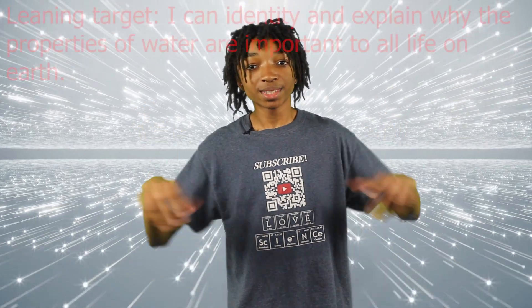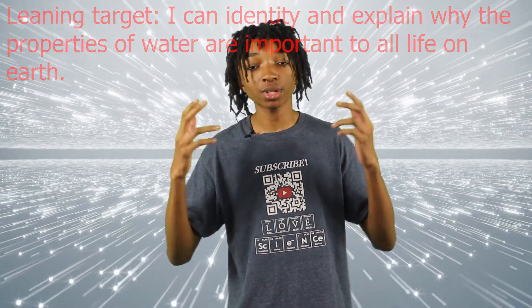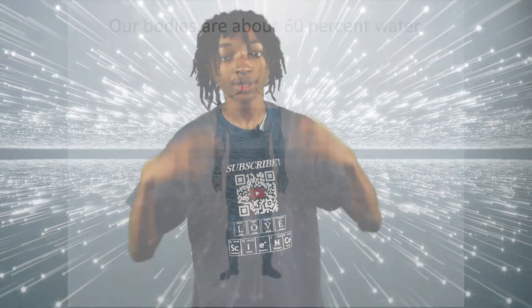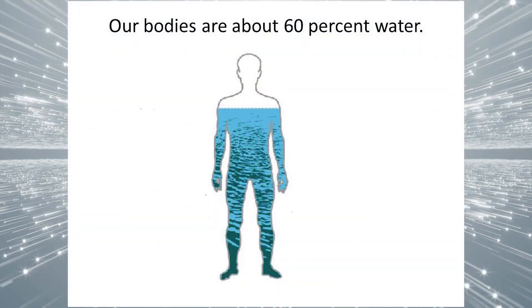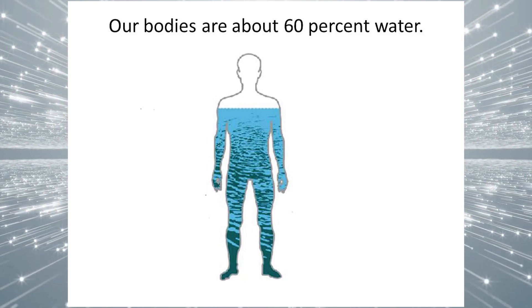The target for today is: I can identify and explain why the properties of water are important to all life on Earth. As you all know, water is critical for the survival of every living thing on this planet. Water on average makes up 60% of our bodies, and all of the unique properties of water play critical roles in sustaining life on Earth. We will explain how the six physical properties of water keep organisms alive.